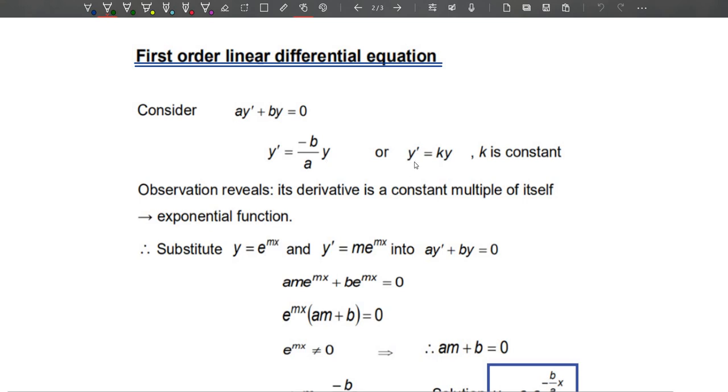Or it can also be written as y' = ky, where k is a constant - negative b over a. These are constants, so we can represent k equals negative b over a. From the observation here, y' = ky is actually the derivative of a constant multiple of itself.